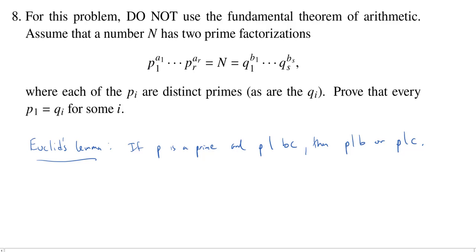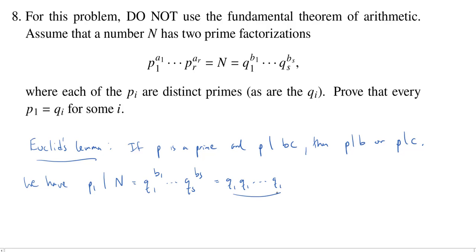Now, here we have a prime which we know divides n. So p1 is one of the prime factors of n, meaning p1 divides n. But n is equal to the other prime factorization: q1^(b1) times ... times qs^(bs). We could expand this out as a long product — b1 copies of q1, b2 copies of q2, and so on up to bs copies of qs. So p1 is a divisor of this long product.